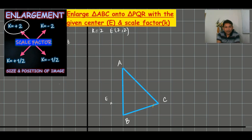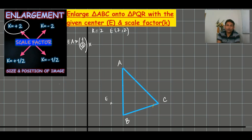From center to A, the column vector is (1, 3). I want to multiply that column vector with the scale factor. Two times one is two, and two times three is six. This (2, 6) is the position of the image of A, that is P — so two across and six up from the center.